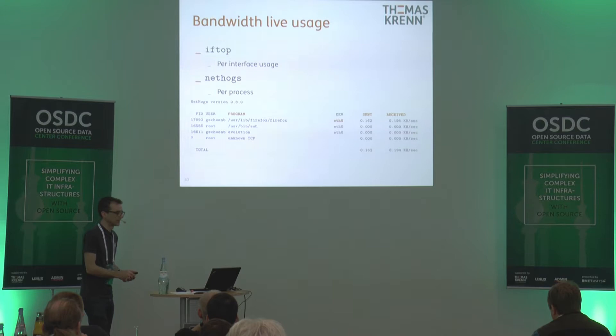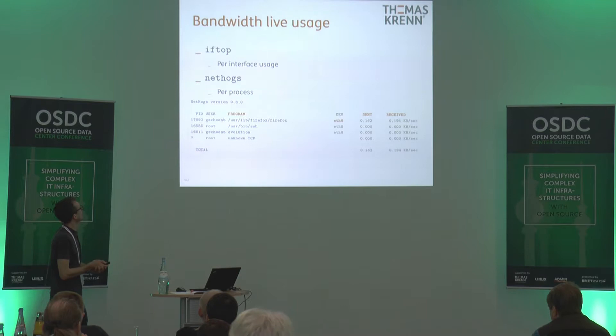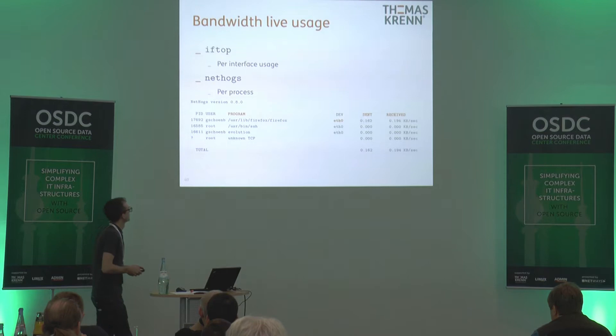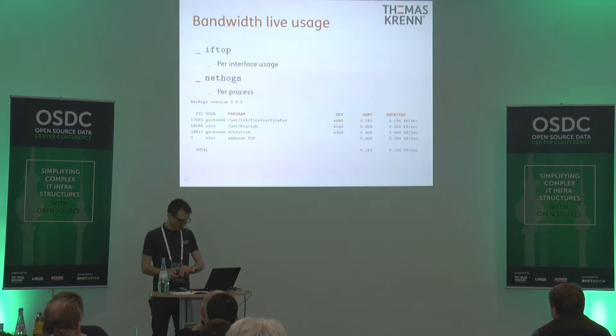When it comes to network bandwidth live usage, you could use IFTOP for per-interface usage, or nethogs to get information per process to see which of your processes is causing which amount of network IO.